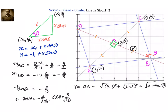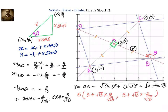Applying the parametric formula for coordinates of B: x = x1 + r·cosθ = 3 + √13 · (3/√13), and y = y1 + r·sinθ = 5 + √13 · (-2/√13). Simplifying: the √13 cancels, giving x = 3 + 3 = 6 and y = 5 - 2 = 3. So the coordinates of B are (6, 3).